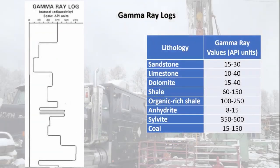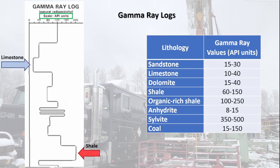Gamma ray logs measure the total gamma rays in API or GAPI units. These are standard units defined by the American Petroleum Institute. Generally, high readings of GAPI indicate shales, and low readings indicate formations like sandstone, limestone, and dolomite.